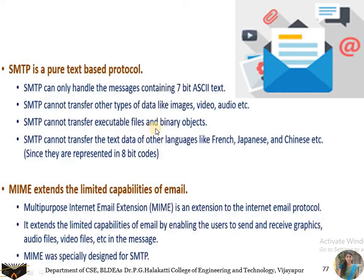SMTP cannot transfer executable files and binary objects, so we cannot send those with email. It also cannot transfer text data of other languages such as French, Japanese, and Chinese, because those languages require representation in formats beyond 7-bit ASCII. To overcome these limitations, we have an extension called MIME.